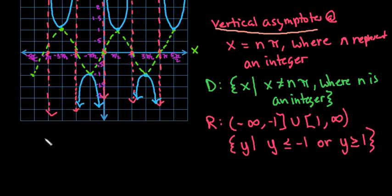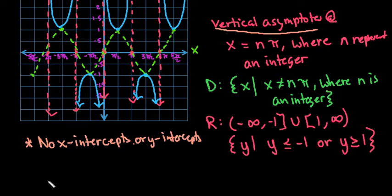For this one, there are no x-intercepts. The cosecant curve, the parent function, will never cross the x-axis. There is also no y-intercepts on this one either because it's undefined at that point.